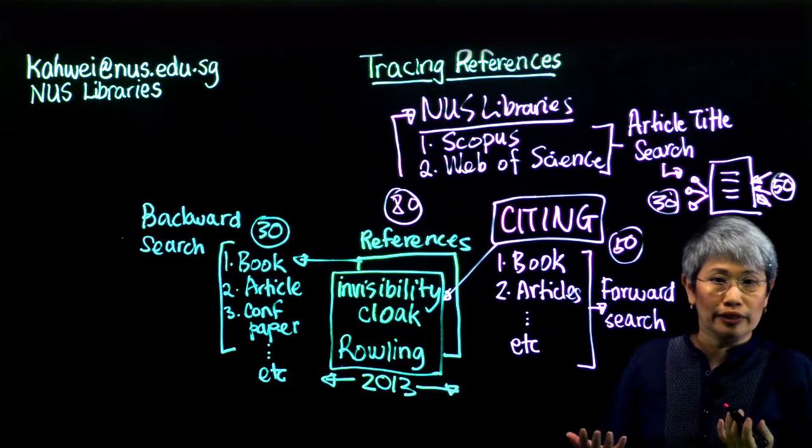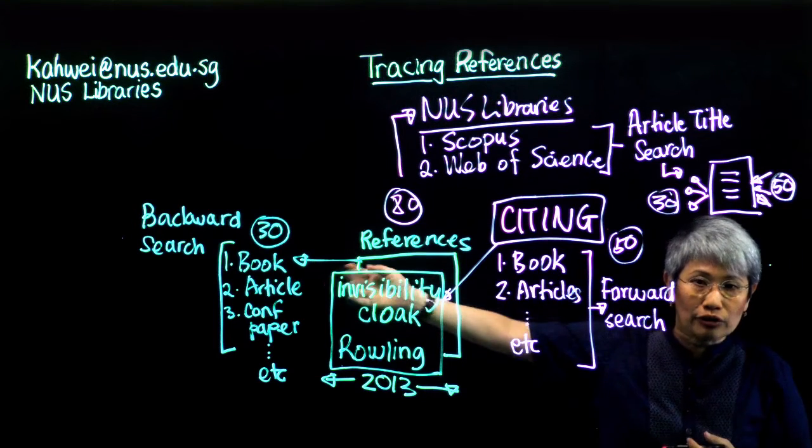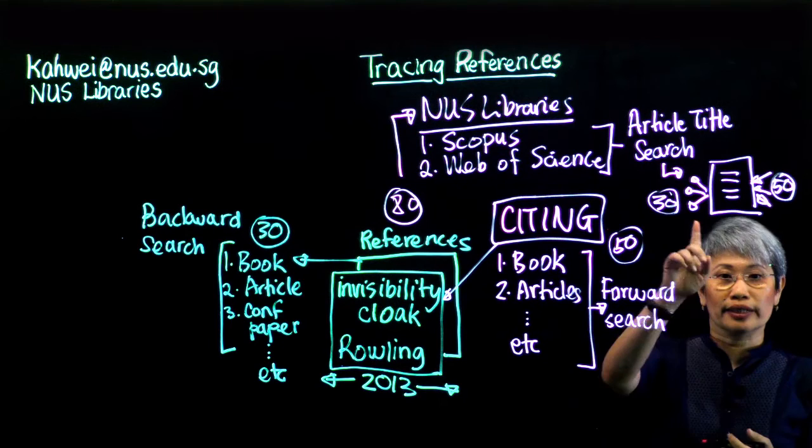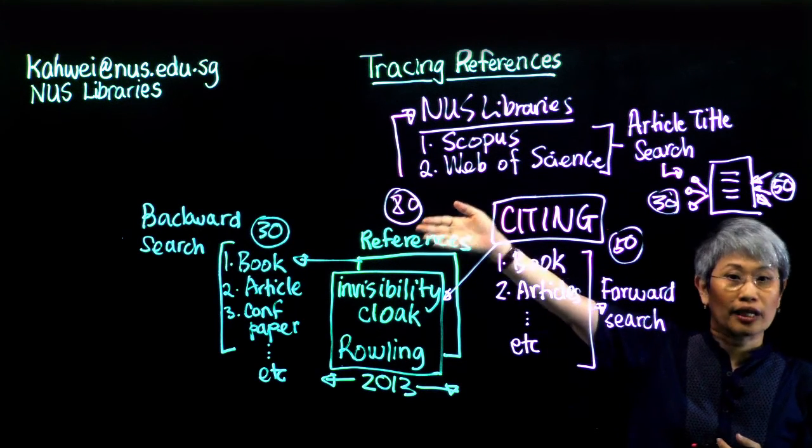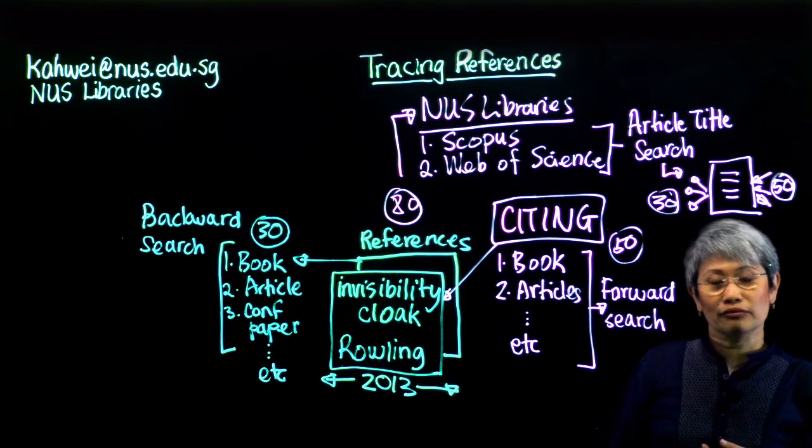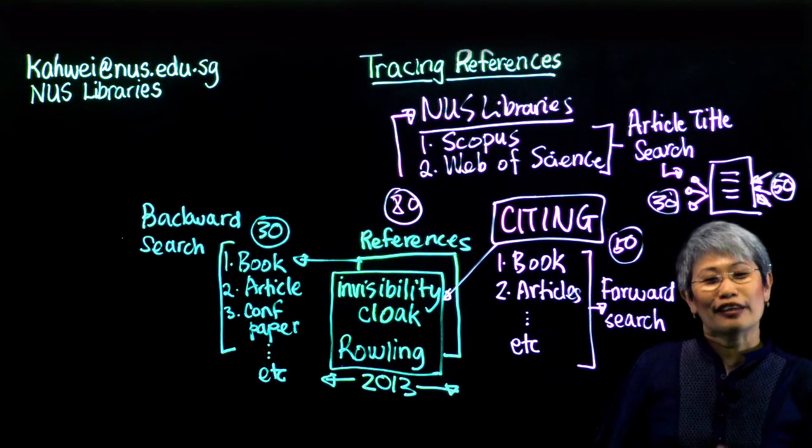So what have we done here today? We've done a backward search. We've done a forward search. And with these two searches and using a database, you've got your 80 publications, a lot more than when you first started out with. We hope you find this method useful. Thank you and goodbye.